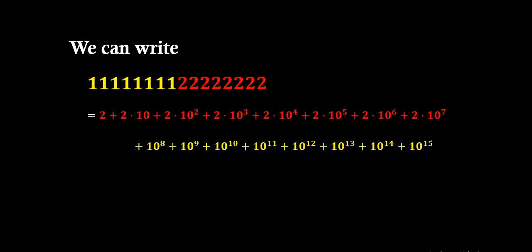The second line contains terms 10⁸ plus 10⁹ plus 10¹⁰ plus 10¹¹ plus 10¹² plus 10¹³ plus 10¹⁴ plus 10¹⁵. We can see that the terms written in yellow — powers of 10 starting from 1 plus 10 plus 10² up to 10⁷ — are present in the first group but missing from the second.